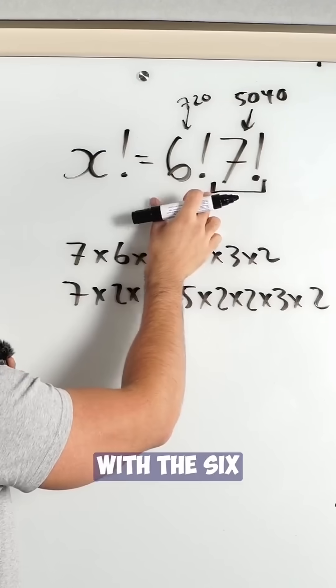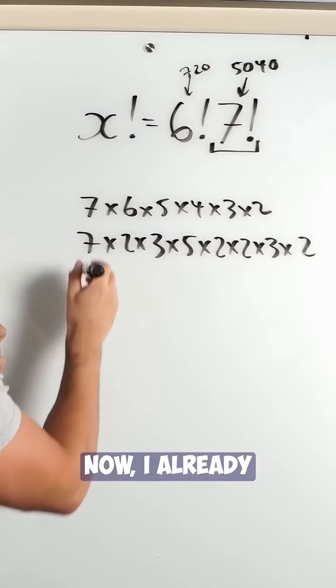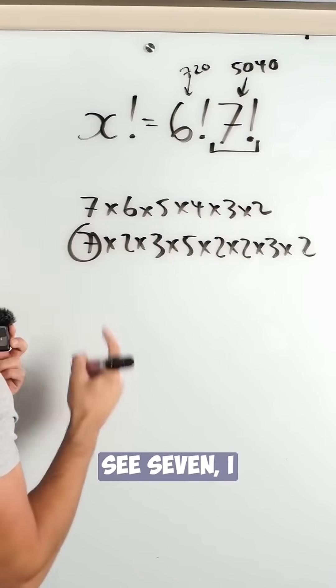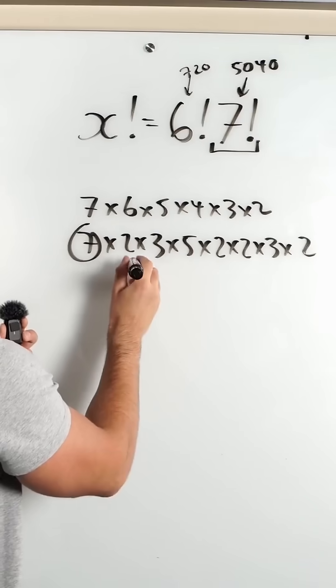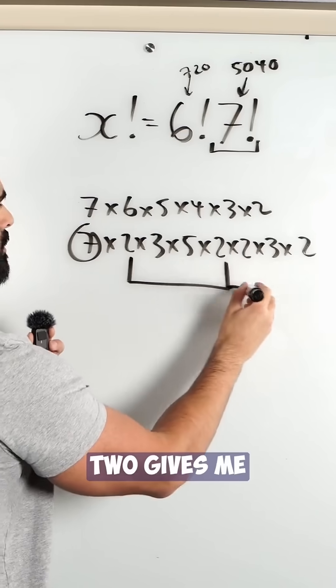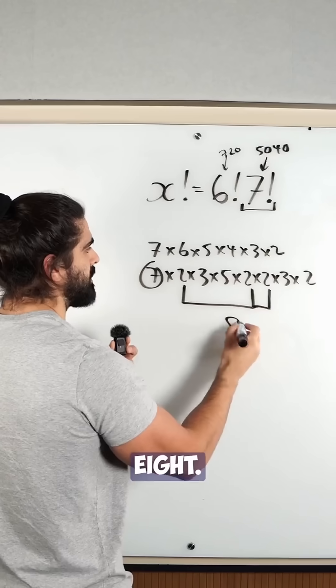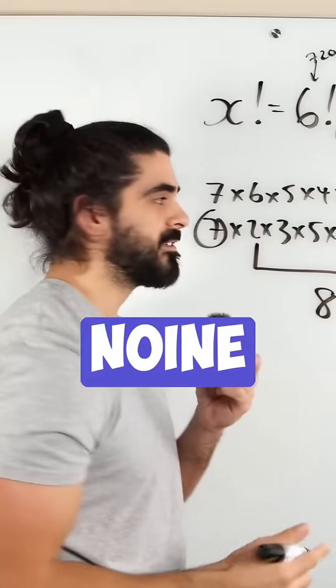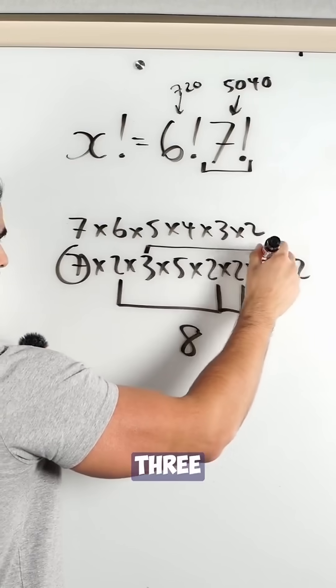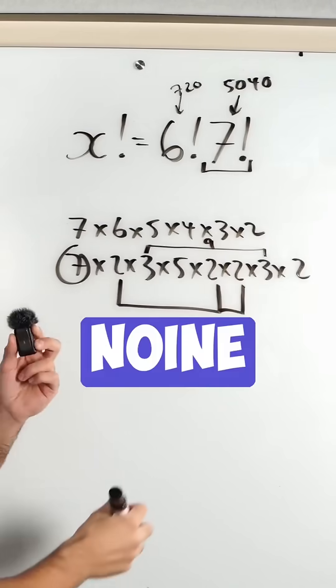Now, I already see 7. I need to find 8. 2 times 2 times 2 gives me 8. I now need to find 9. 3 times 3 gives me 9.